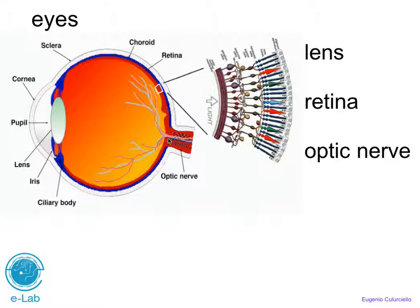The retina is a neural circuitry that is fairly complicated and not even completely fully understood yet. It has a certain number of neurons and receptors, and it conveys information out via an optic nerve to the following LGN — lateral geniculate nucleus — and the visual cortex.